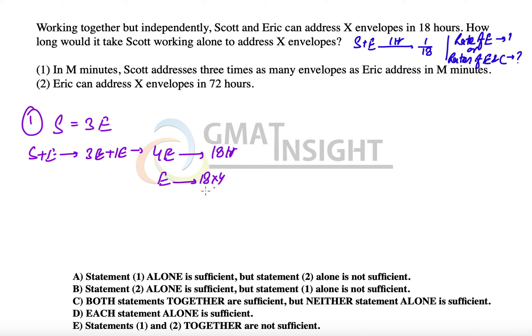takes 18 times 4, which is 72 hours. Now we know the efficiency of Eric. Since Scott is three times as efficient, the time of Scott will be 72 divided